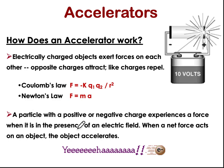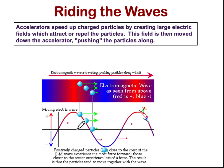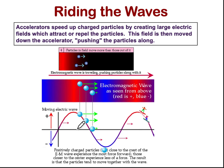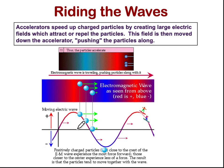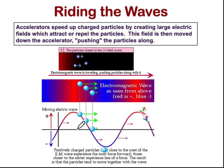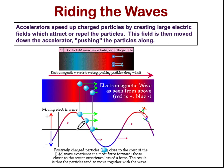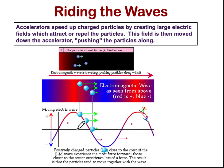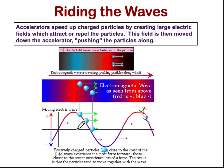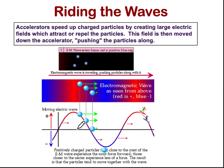Look at this animation. Accelerators speed up charged particles by creating large electric fields which attract or repel the particles; this field is then moved down the accelerator. The red is positive and blue is negative. Particles, whenever they are close to the crest of a given electromagnetic wave, experience the most force in the forward direction. At the trough, you have acceleration. This is the basic principle of riding the waves.